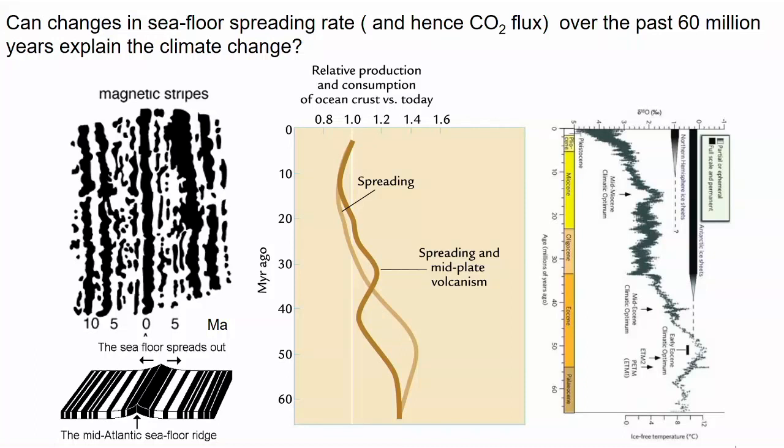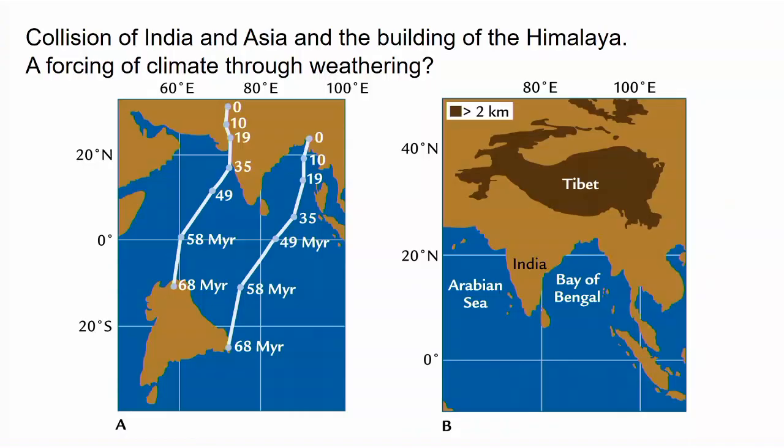We can get estimates of volcanism from seafloor spreading chronologies. We can date how old the mid-ocean ridge is at different points away from its centre using magnetic stratigraphy, and if we know how old it is and how far apart it is from the middle, we can work out the spreading rate — producing records of how much volcanism there's been through time. About 60 million years ago, rates of volcanism were a little higher than present, explaining changes in temperature through more CO2 in the atmosphere over the long term.